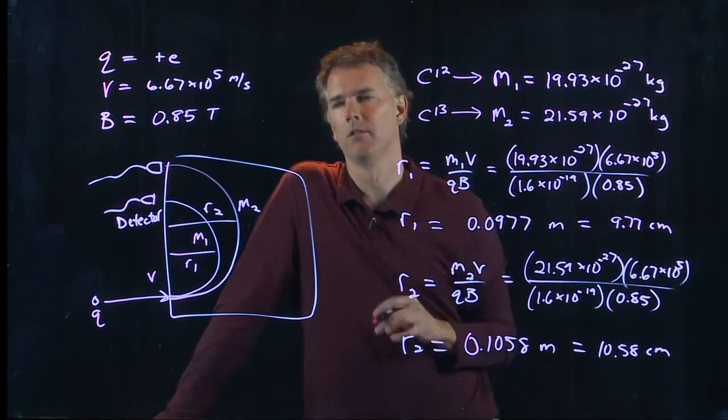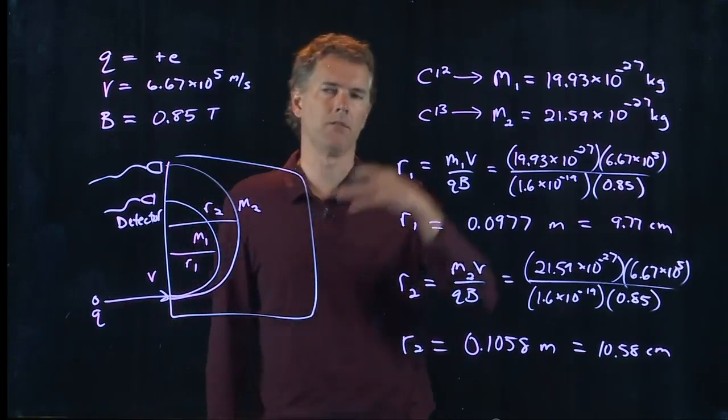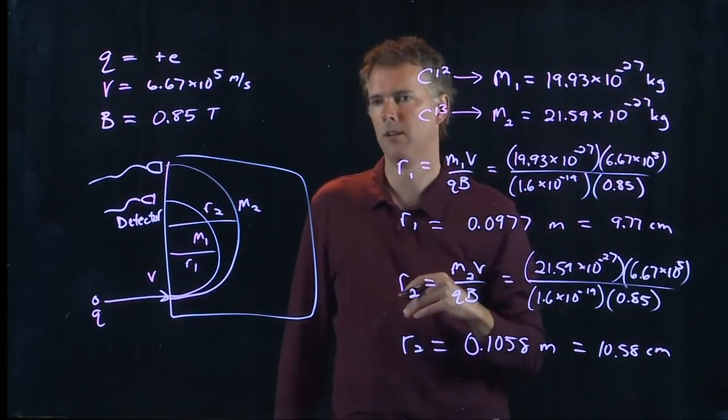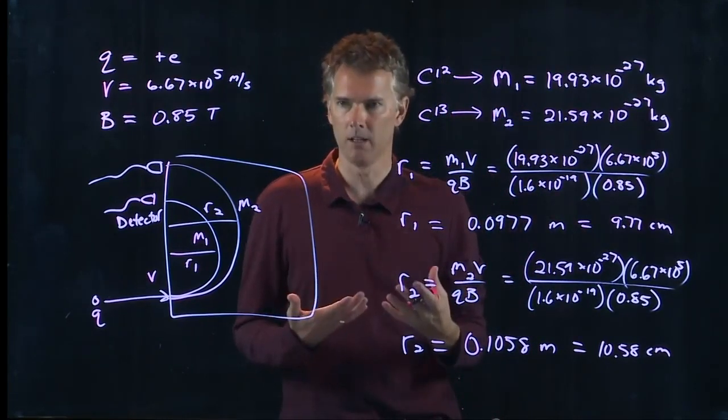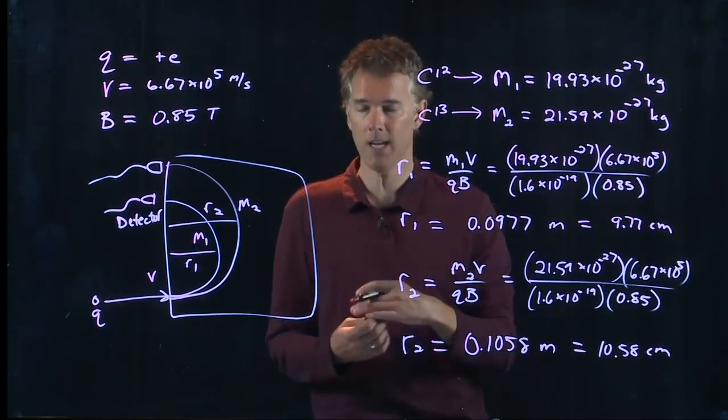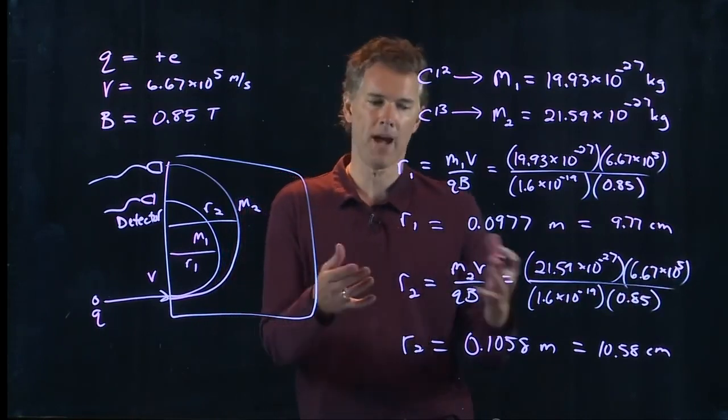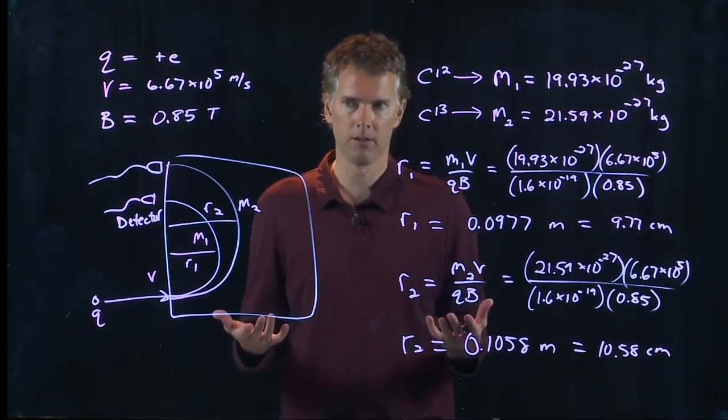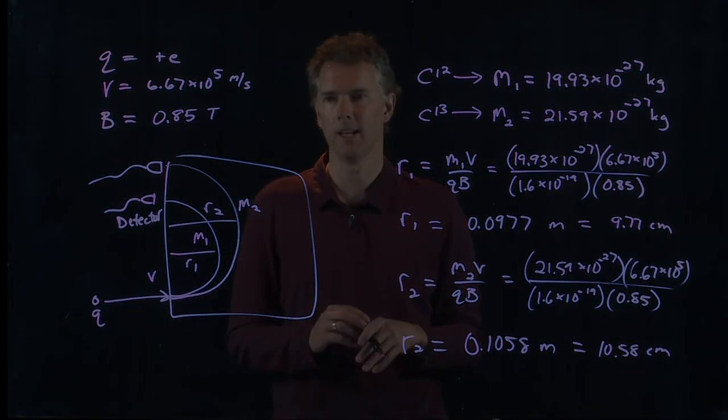Carbon 13 has an extra neutron on it, and so it's heavier than carbon 12. This is how you do stuff like carbon dating. You look at the ratio of carbon 12 to carbon 13, and this tells you how old something is. So mass spec is a way to date things. How old is this chunk of material? Do carbon dating on it.